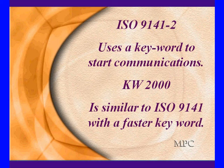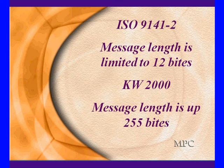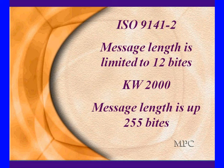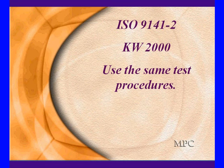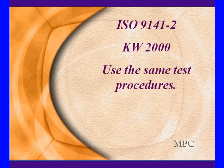It uses a keyword to start communications, and KW2000 is very similar except it puts out a higher speed keyword than the ISO 9141. The KW2000 is the newest version. The message length is much longer on the KW2000 — 255 bytes instead of 12 bytes. You'll see some vehicles going to it just prior to changing over to CAN. The 9141-2 and the KW2000 use the same test procedures, though the message structure is slightly different but the signaling is the same.